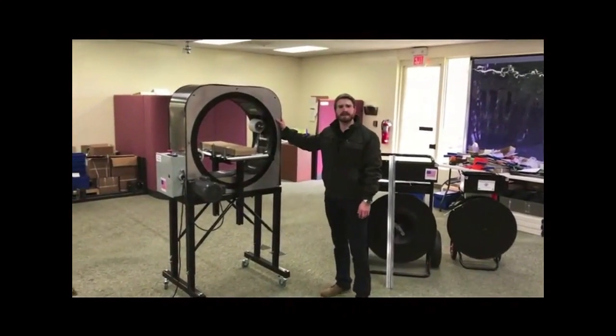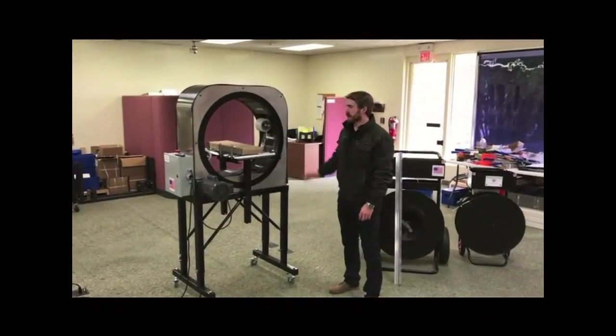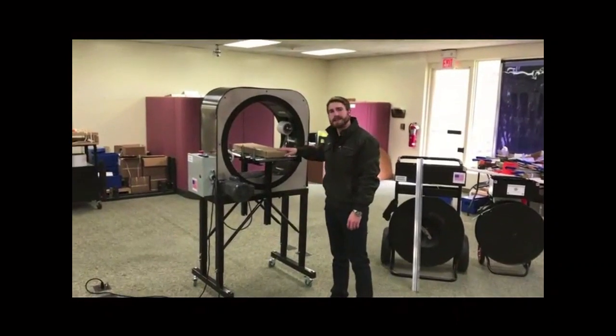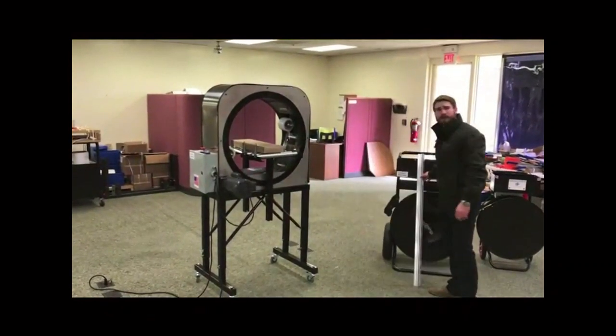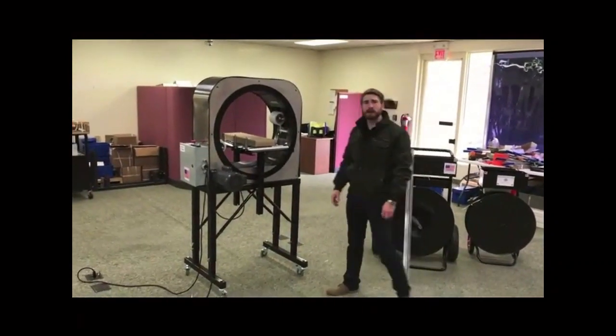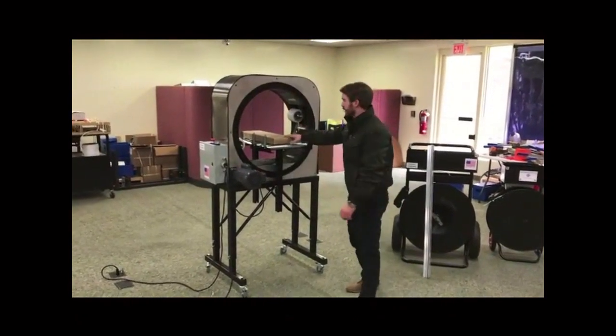Today we're going to talk about our EP6700 Ringrapper. This item is going to allow you to bundle boxes, aluminum extrusions, door frames, piping, logs, lumber. Let me show you how it works.